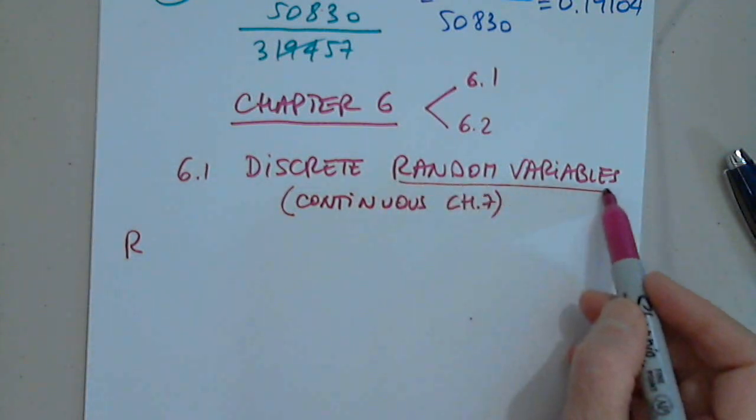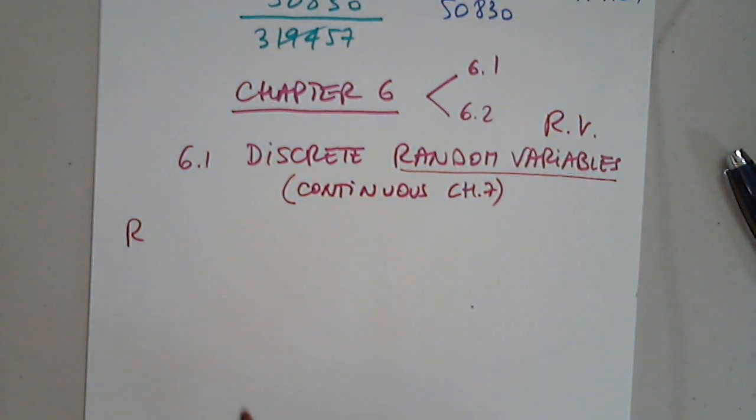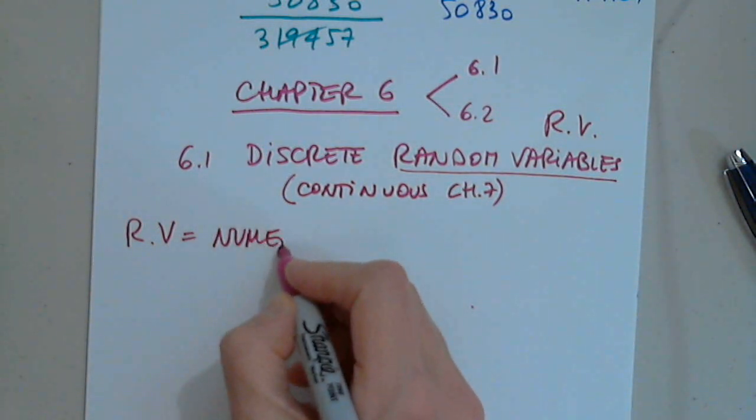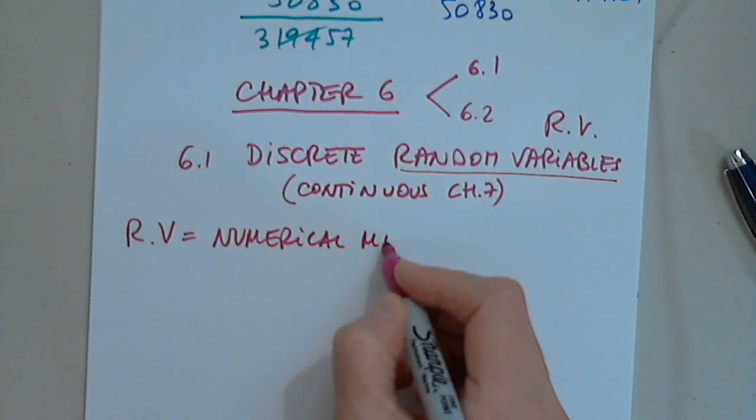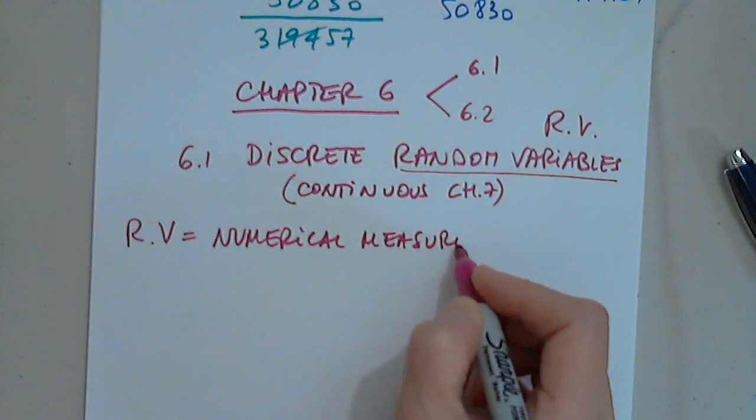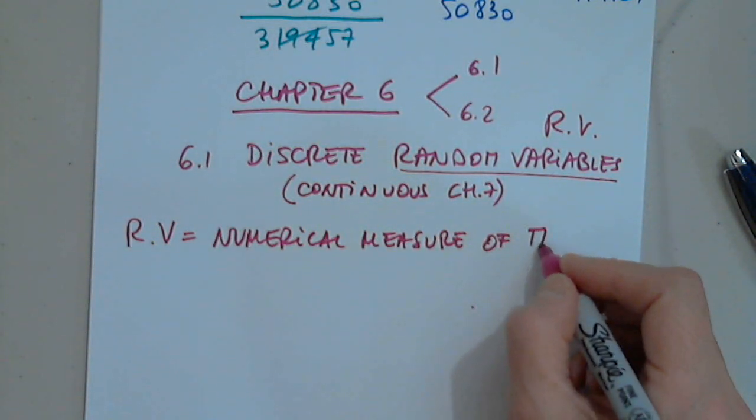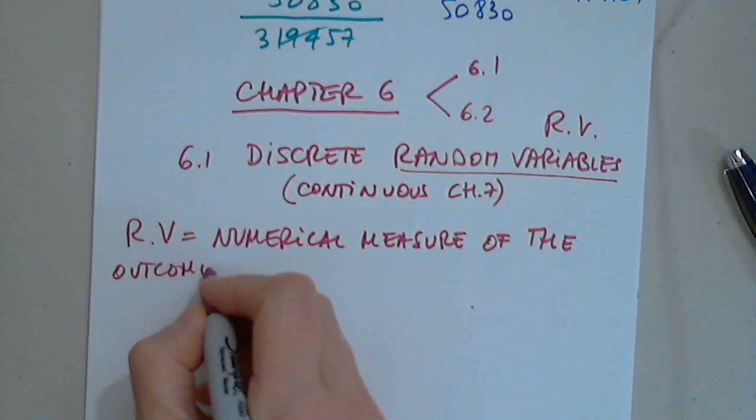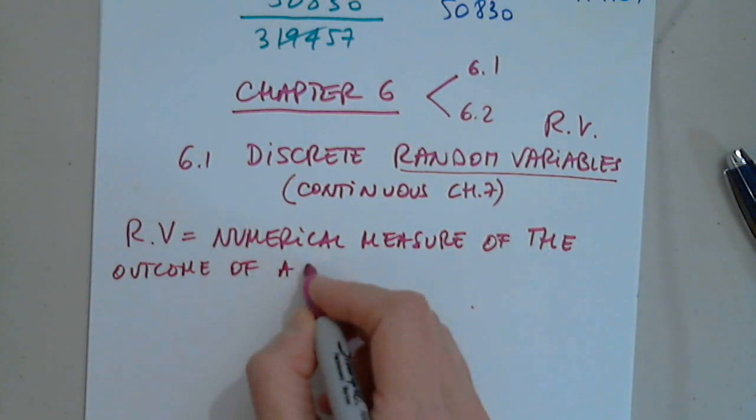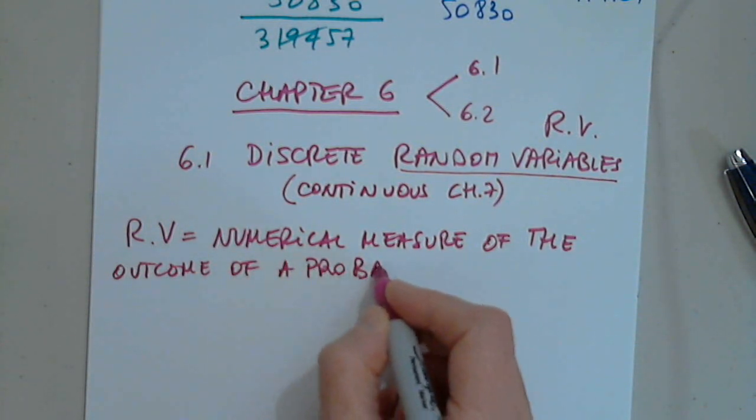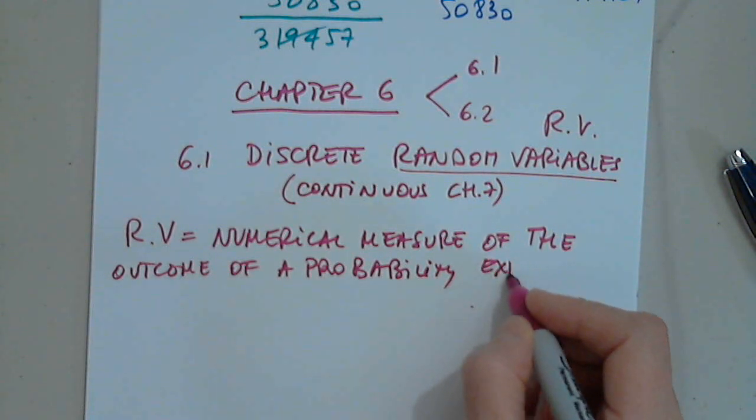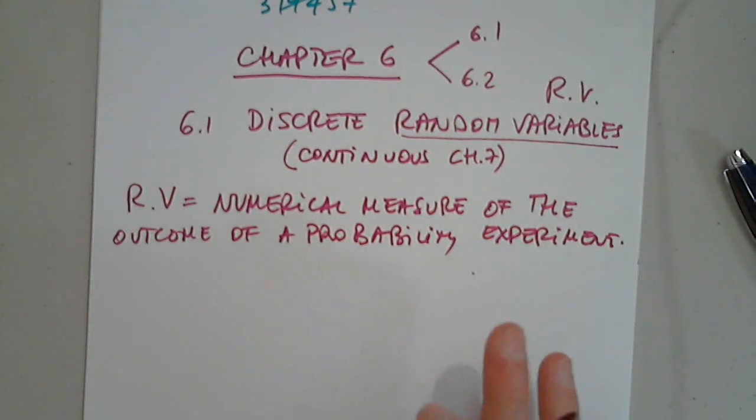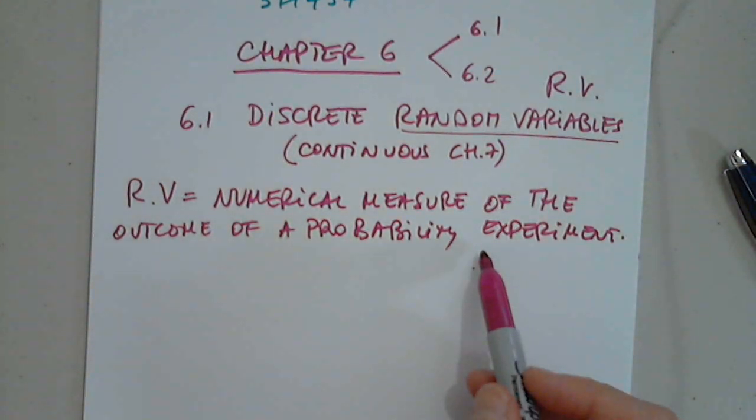Random variable, I will abbreviate it as RV. So a random variable is basically a numerical measure of the outcome of a probability experiment. So in other words, it depends on chance, right? Depends on probability.